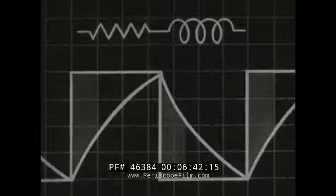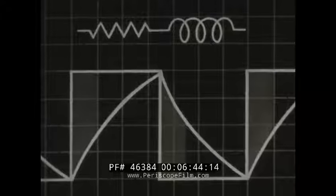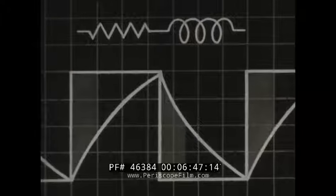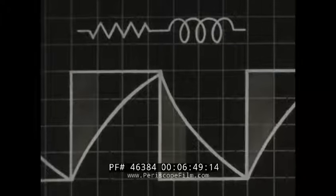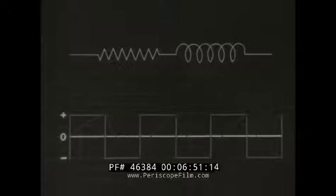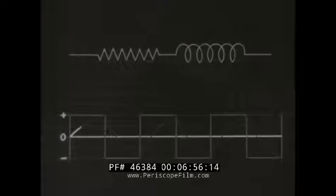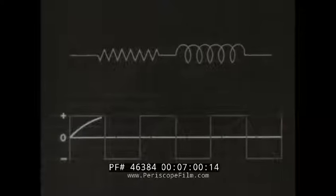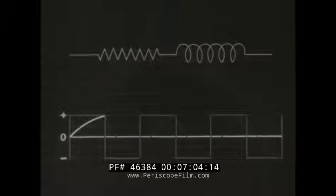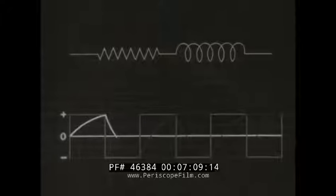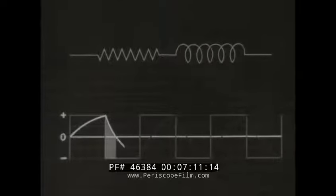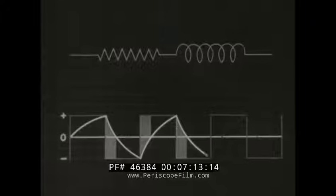Also, in a circuit containing inductance and resistance, the current and voltage are not quite in step. Over the graph of alternating battery voltage, there is superimposed the curve which the current takes due to the reactance of the inductor. Again, periods are found when the voltage and current are on opposite sides of the zero line. In this case, however, the current lags behind the voltage which produces it.